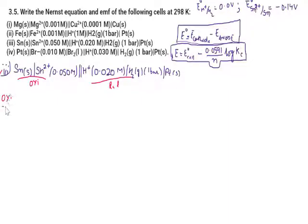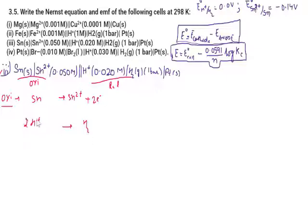At the anode, Sn loses 2 electrons to form Sn²⁺. At the cathode, 2H⁺ gains 2 electrons to form H₂. Overall cell reaction: Sn(s) + 2H⁺(aq) → Sn²⁺(aq) + H₂(g). N = 2 electrons transferred.